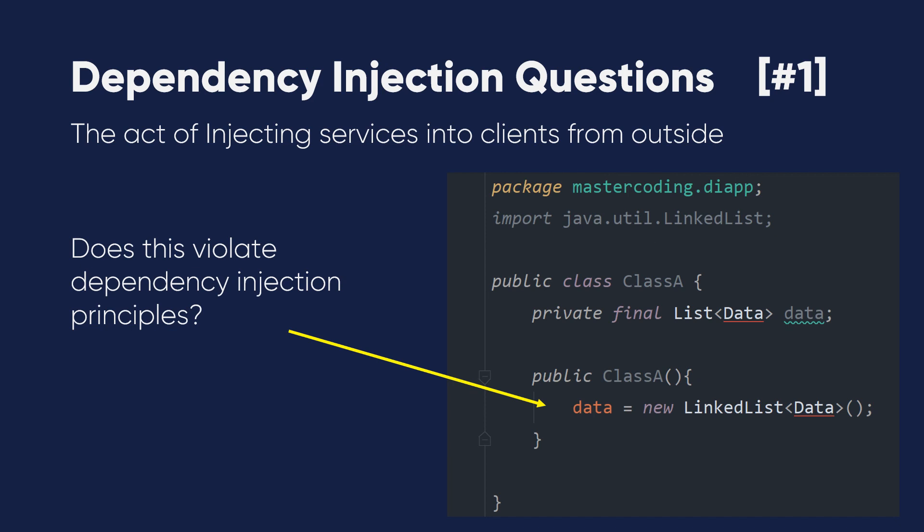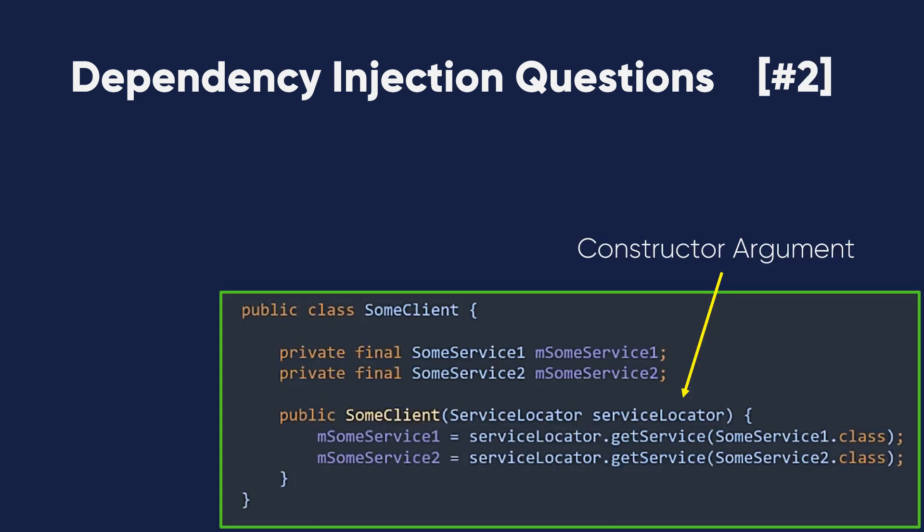Question two: imagine I have a class called SomeClient with two services, and inside the constructor I have injected a service locator object. I use that service locator first with SomeService1 and second with SomeService2, obtaining them from outside. The question is: the constructor argument is a service locator, but how will it determine which service will be used?